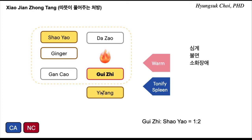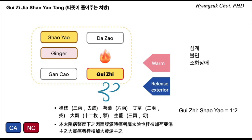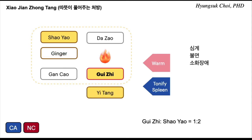What is the difference from gui-ji-jia-xiao-yao-tang? Xiao-jian-jong-tang — this is a really important and famous formula. My clinic is specialized for children, so I use this formula a lot.